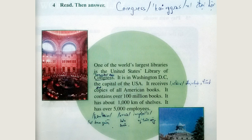One of the world's largest libraries is the United States Library of Congress. It is in Washington DC, the capital of the USA. It receives copies of all American books. It contains over one hundred million books. It has about one thousand kilometers of shelves. It has over five thousand employees.